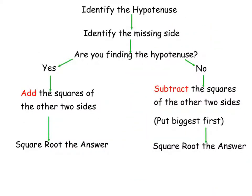Here's a quick summary of how we do Pythagoras' theorem. First of all, identify the hypotenuse, and that's by drawing the little arrow across from the right angle. Then you identify which side you're trying to find out. Are you trying to find out the hypotenuse? If so, you add the squares of the other two sides, and then square root the answer. However, if you're not finding the hypotenuse, then you subtract the squares of the other two sides. You always put the biggest one first, and then again, square root the answer. The key thing is identifying which side you're finding out. And if it's not the hypotenuse, you subtract. If it is the hypotenuse, then you add.